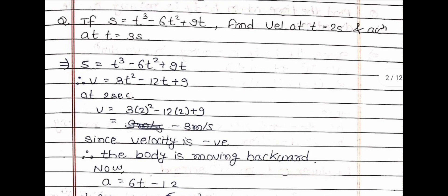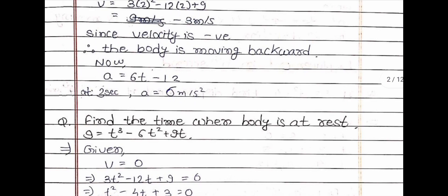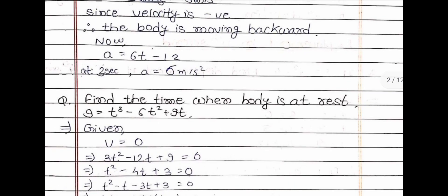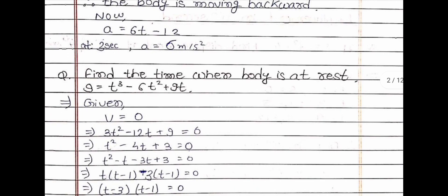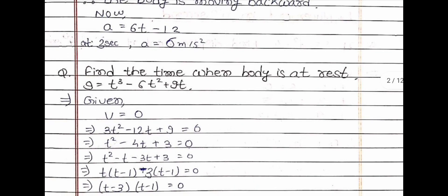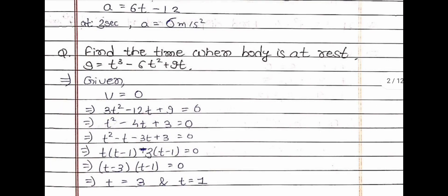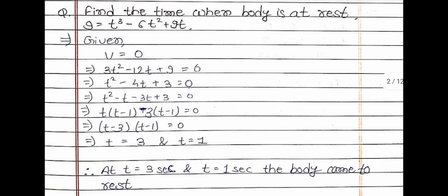Now let us come to another question: find the time when the body is at rest. s = t³ − 6t² + 9t. Since the body is at rest, velocity will be 0. Differentiate the distance to get velocity, then equate it to 0 to find the time. You can take a screenshot of the solution.